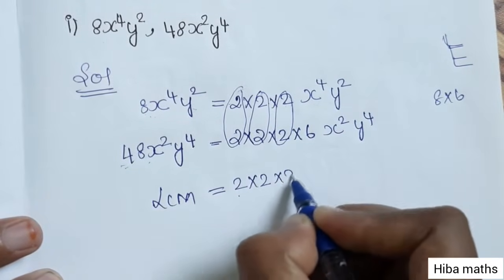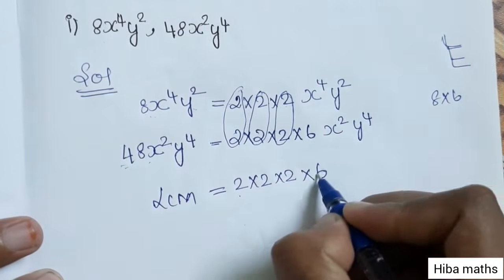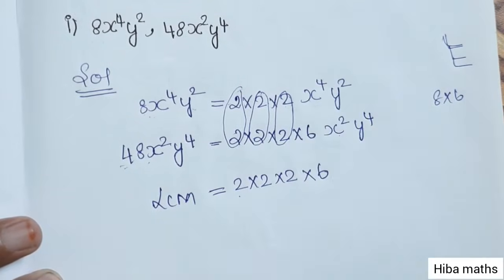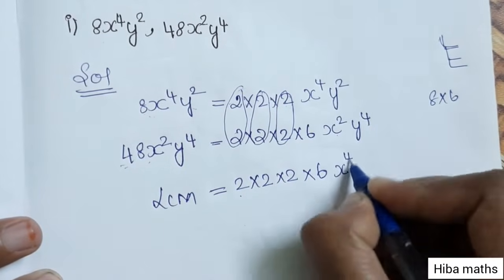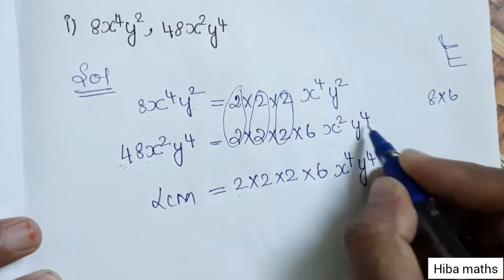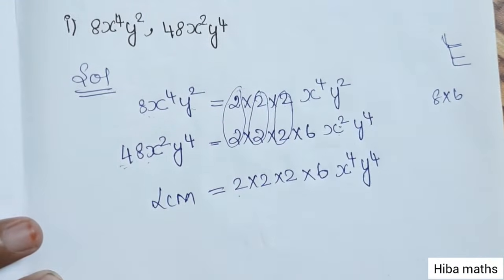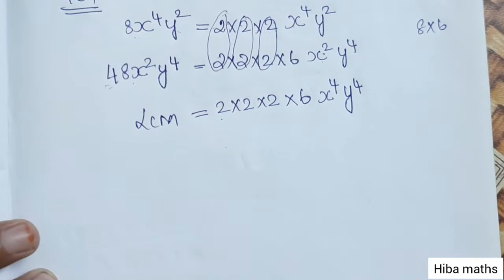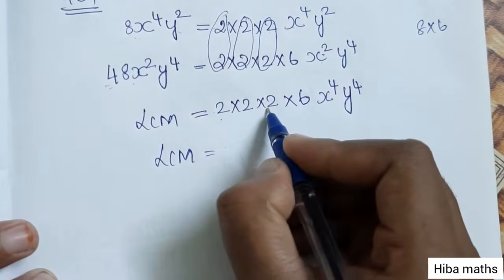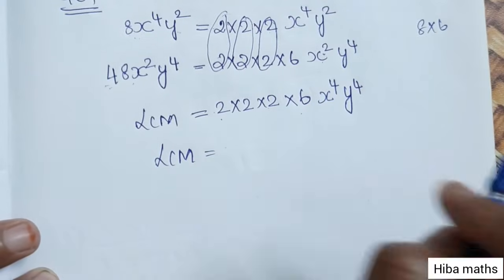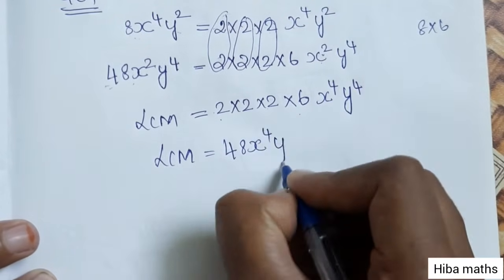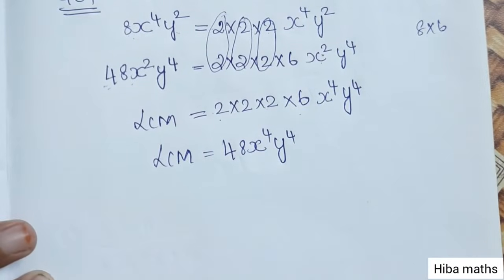Looking at the LCM, we have 2 into 2 into 6, x to the power 4, and y to the power 4. The LCM value is: 2 times 2 is 4, times 2 is 8, times 6 is 48, giving us 48x⁴y⁴.